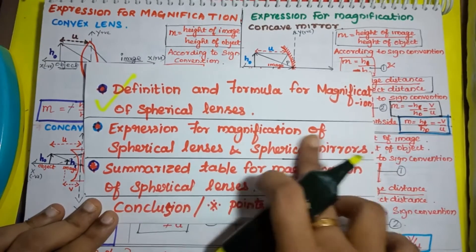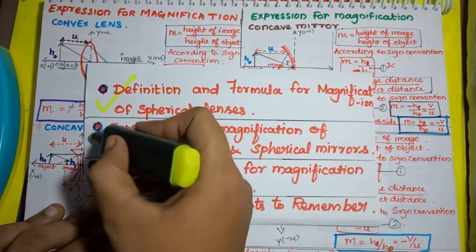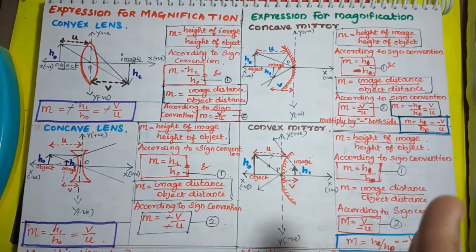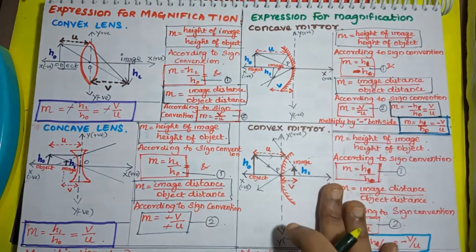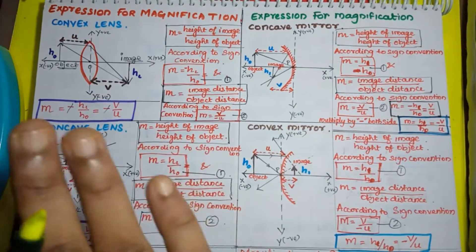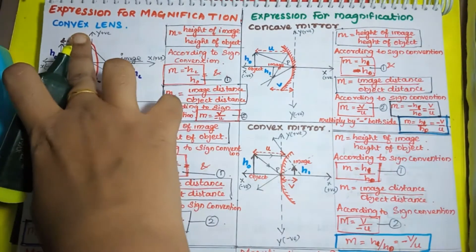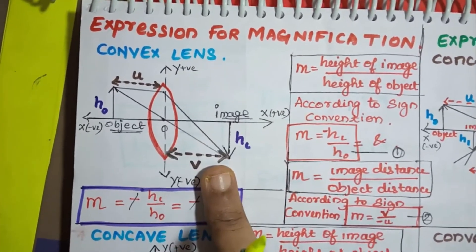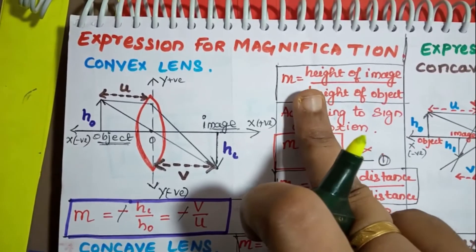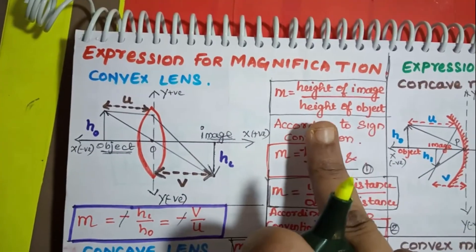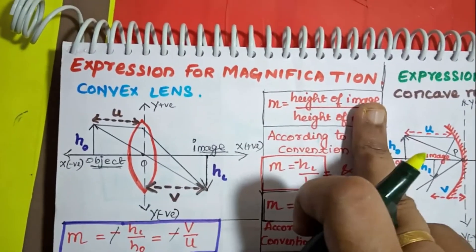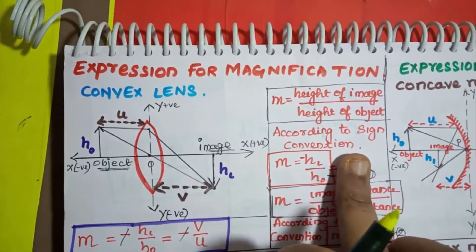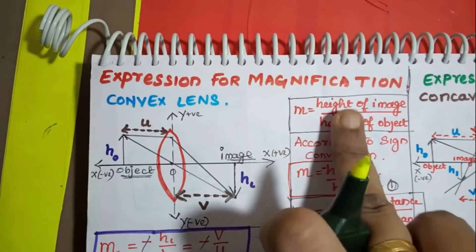Next, let's look at the expression for magnification of spherical lenses and compare it with spherical mirrors. Spherical lenses are two types: convex lens and concave lens. Spherical mirrors are also two types: concave mirror and convex mirror. Let's start with the first expression from the convex lens. This is the ray diagram for image formation in a convex lens. We know magnification equals height of the image over height of the object. We are going to write these according to the new Cartesian sign convention.